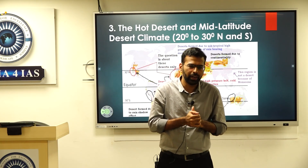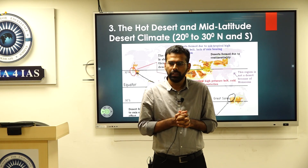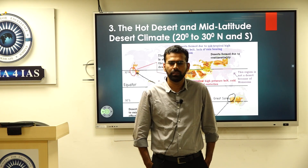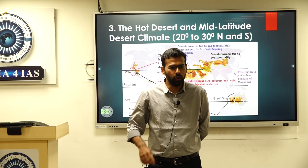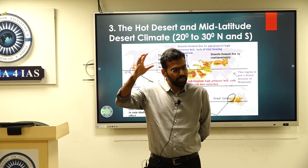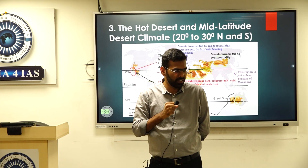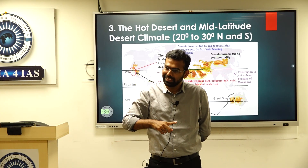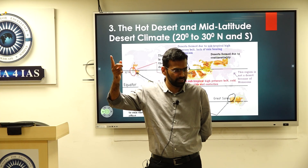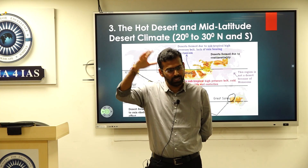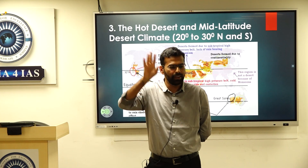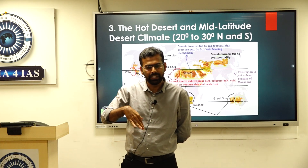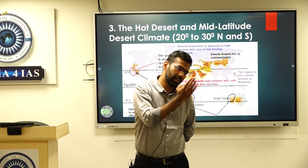The daily range of temperature variation is very high in deserts. Because clouds do not form, nothing blocks the sun's energy — so the land heats up easily during the day. At night, all the absorbed energy radiates back quickly, so nighttime temperatures drop drastically. This is why daytime temperatures are very high and nighttime temperatures are very low in desert regions.